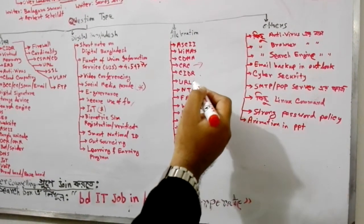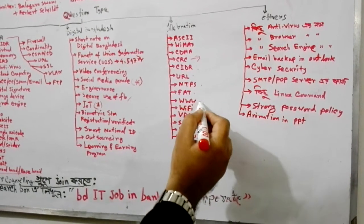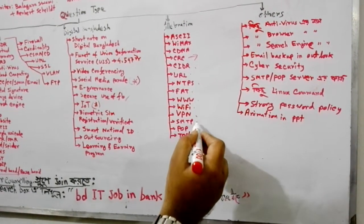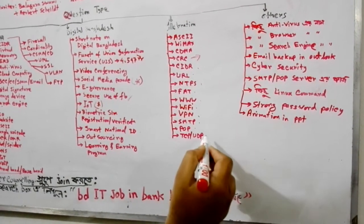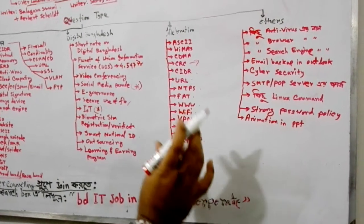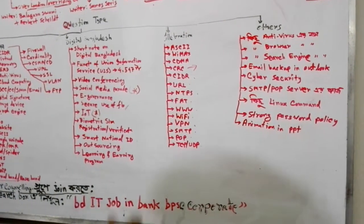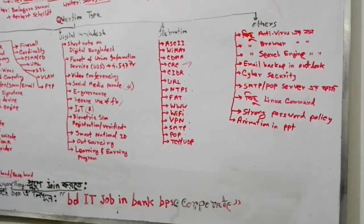Elaboration of technical terms includes: WiMAX, CDMA, CRC (Cyclic Redundancy Check), CIDR, URL, NTFS, WWW, WiFi, VPN, SMTP, POP, TCP, and UDP. We will see the elaboration of all these terms.